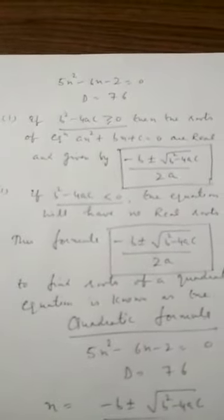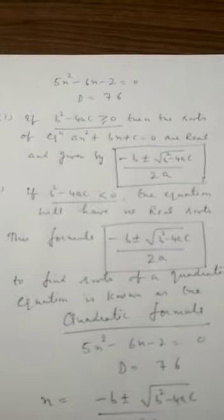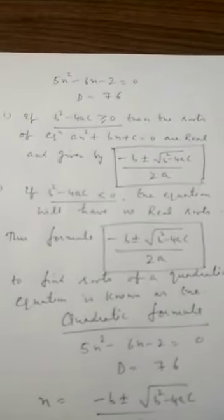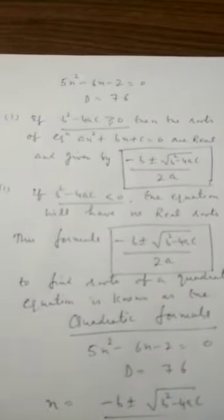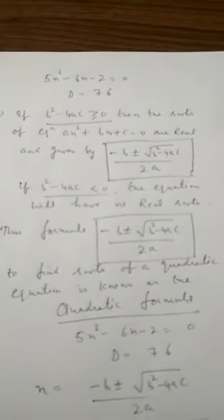Listen carefully to the condition. If b² minus 4ac — the discriminant — is greater than or equal to 0, meaning it is either 0 or positive, then the roots of the equation are real and given by the formula: x equals minus b plus or minus root of (b² minus 4ac) all divided by 2a. This is known as the quadratic formula. If the discriminant is less than 0, meaning it is negative, the equation will have no real roots.